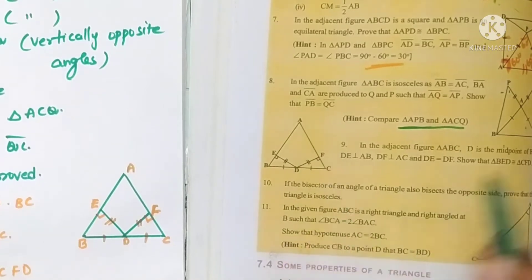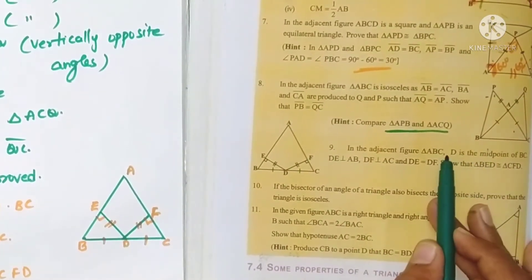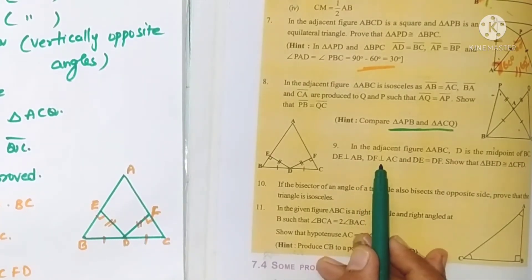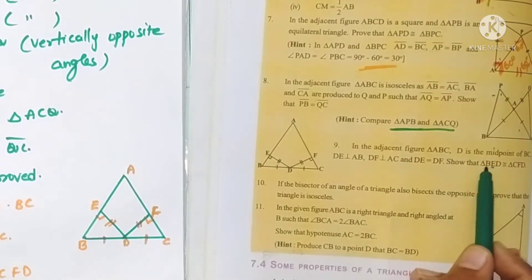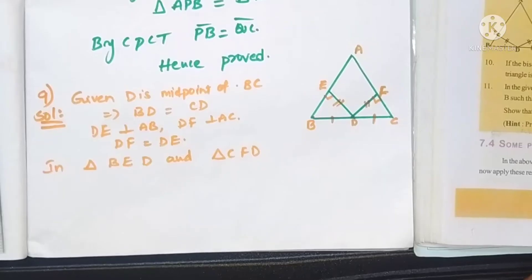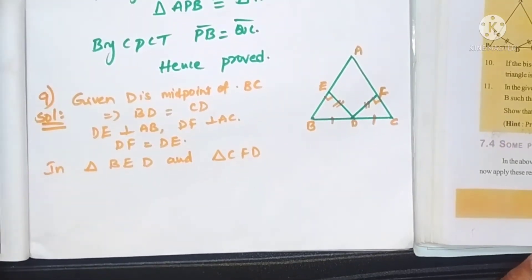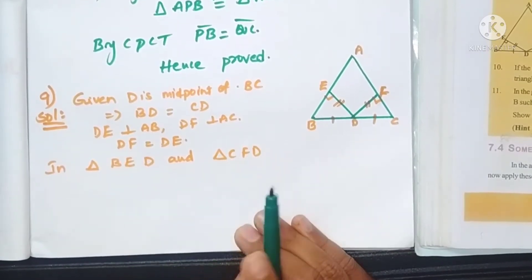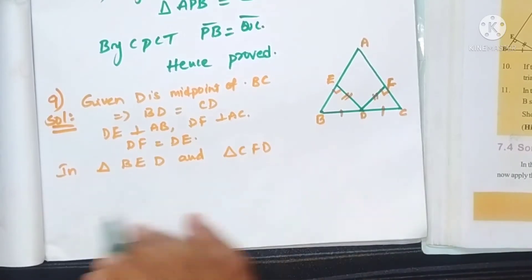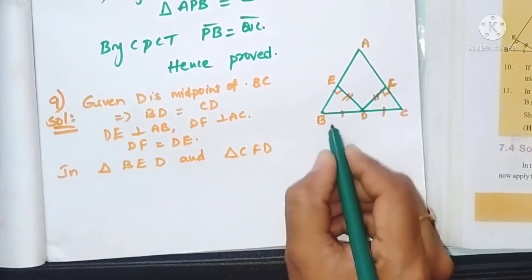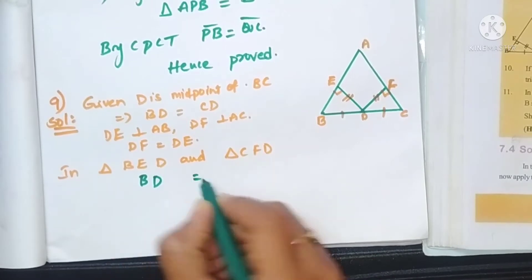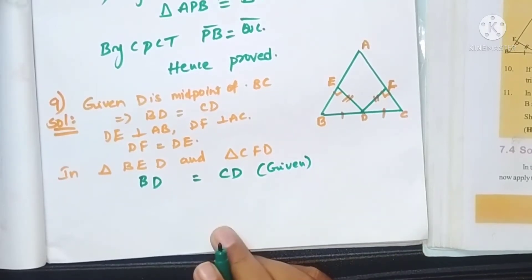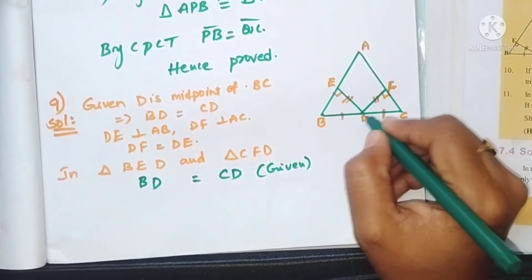Ninth problem: in the adjacent figure, in triangle ABC, D is the midpoint of BC. DE is perpendicular to AB and DF is perpendicular to AC, and DE equals DF. Show that triangle BED is congruent to triangle CFD. From the figure, BD equals CD since D is the midpoint — this is given. And DE equals DF — this is also given.